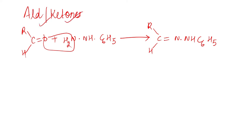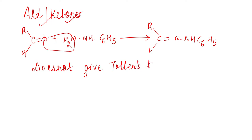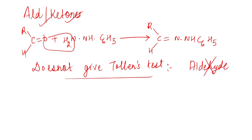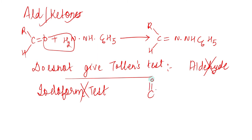So both aldehydes and ketones will form phenyl hydrazone — means yeh compound ya ek aldehyde hai ya ek ketone hai. Second, given hai ki this compound does not give Tollens test — toh iska matlab this is not an aldehyde. Means yeh compound ek ketone hoga. Also, iodoform test bhi nahi dayta yeh compound — means ismein COCH3 group can't be present. Toh yeh aisa ketone hai jis mein COCH3 group nahi hai.